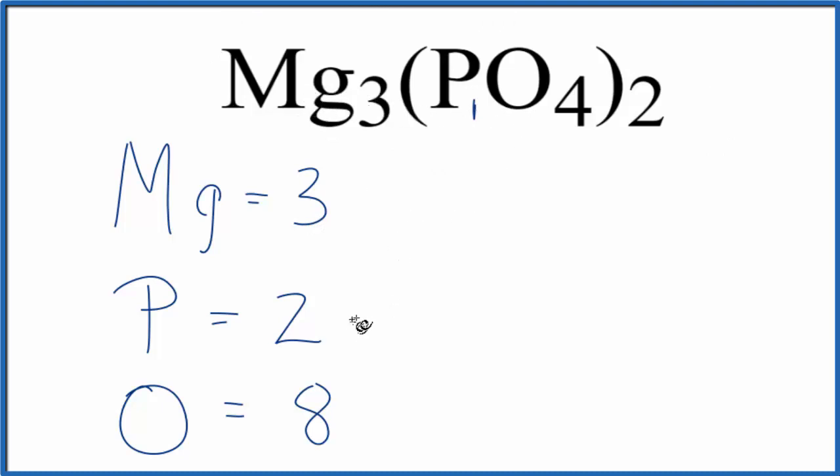Sometimes you're asked how many atoms of, say, phosphorus, would be in one mole of magnesium phosphate. To do that, you'll just multiply the number of phosphorus atoms times Avogadro's number. So we take two times Avogadro's number, and this right here, this is the number of phosphorus atoms in one mole of magnesium phosphate.